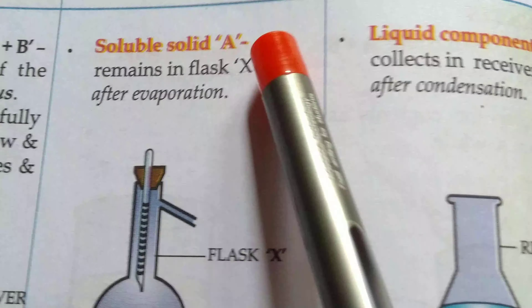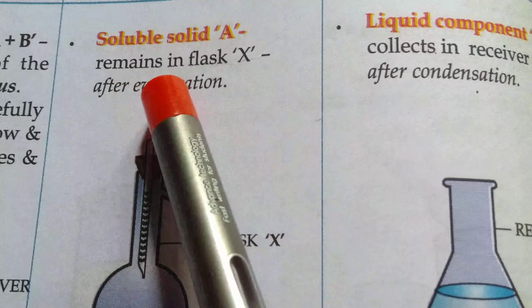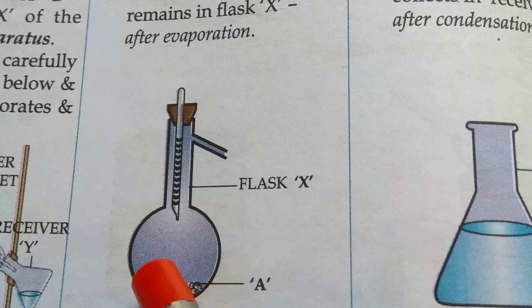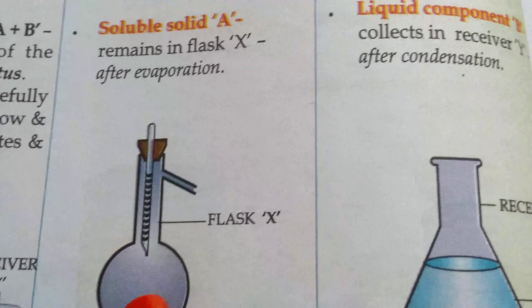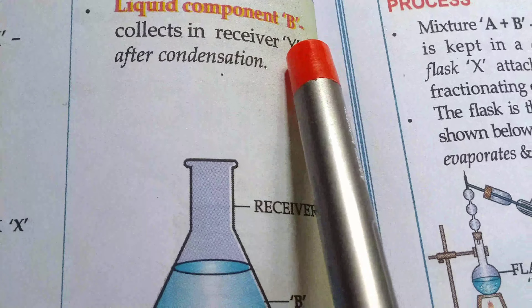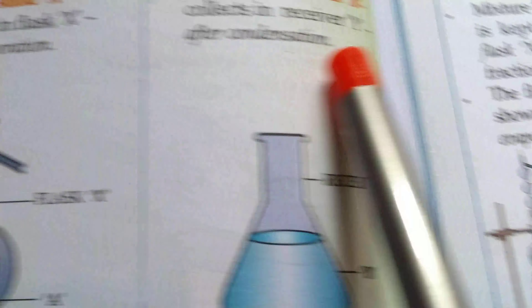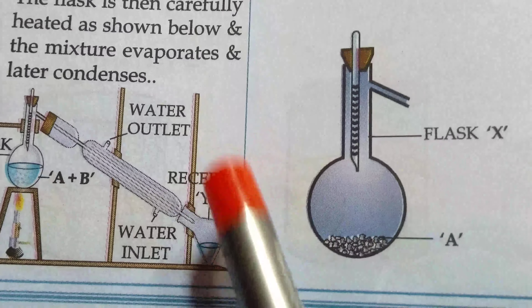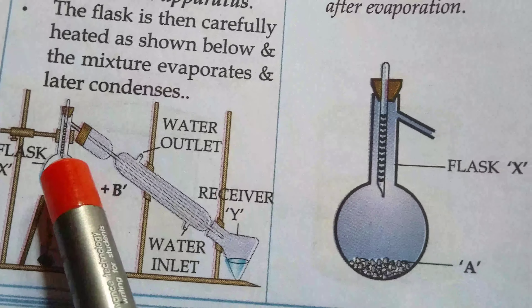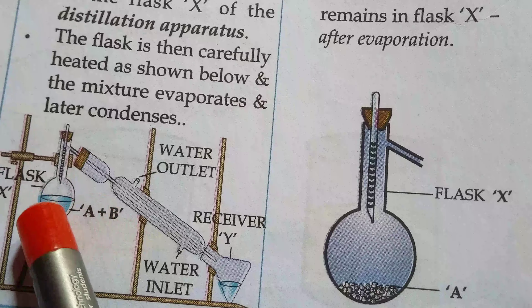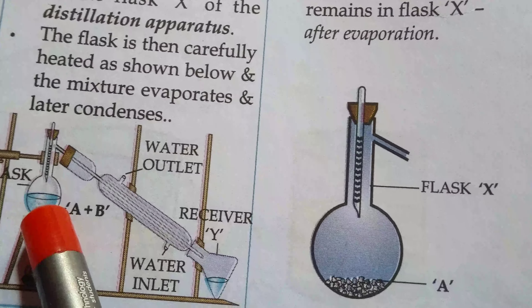Soluble solid A remains in the flask X — it remains at the bottom of the flask. The liquid component collects in receiver Y after condensation. After heating the mixture, the soluble solid remains left at the bottom of the conical flask.